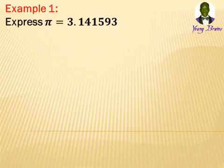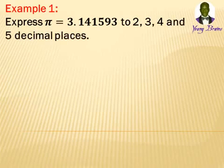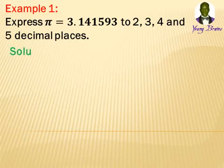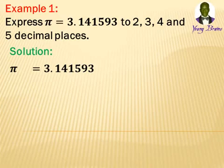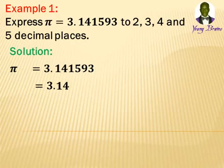Example 1: Express π which is equal to 3.141593 to 2, 3, 4, and 5 decimal places. Solution — we are going to take it one after the other. To correct 3.141593 to 2 decimal places, we write the number before the decimal and count two numbers after the decimal, giving us 3.14 to 2 decimal places.